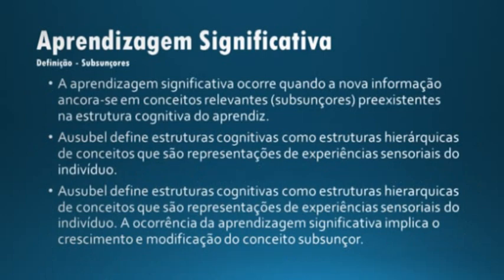A aprendizagem significativa ocorre quando a nova informação ancora-se em conceitos relevantes — subsunçores — preexistentes na estrutura cognitiva do aprendiz. Ausubel define estruturas cognitivas como estruturas hierárquicas de conceitos que são representações de experiências sensoriais do indivíduo. A ocorrência da aprendizagem significativa implica o crescimento e modificação do conceito subsunçor.